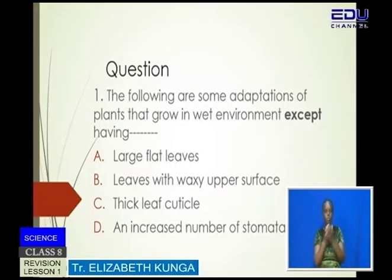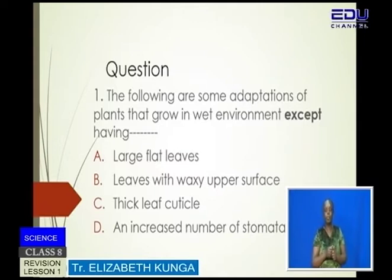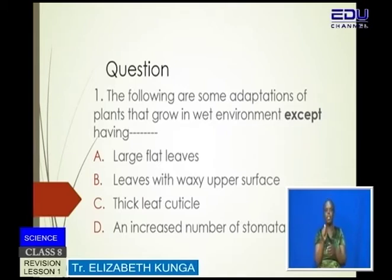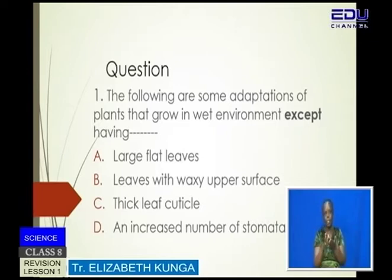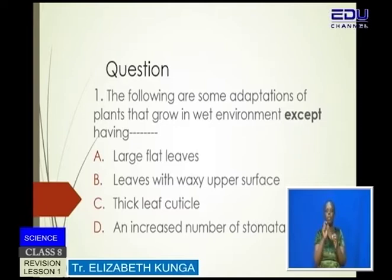The following are some adaptations of plants that grow in wet environment except having... The multiple choices are: A, large flat leaves. B, leaves with waxy upper surface. C, thick leaf cuticle. D, an increased number of stomata.